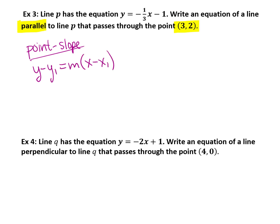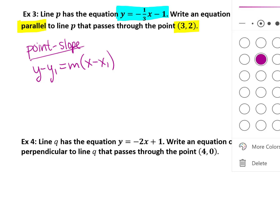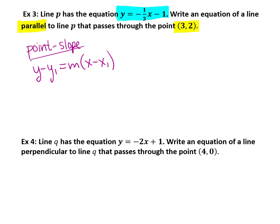So the problem is asking us to write an equation of a line parallel to the line p, given that I highlighted in blue, passing through the point (3, 2). So first of all, we know the slope of that line is negative one-third because it's written in slope-intercept form. We know that parallel lines have to have the same slope, so that's the slope that we're going to use in our linear equation for the new line.